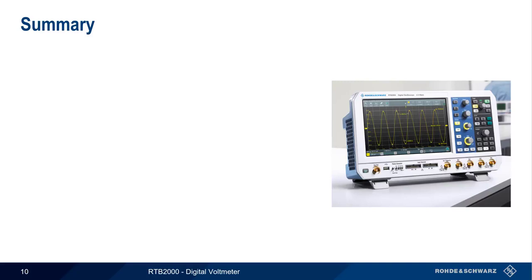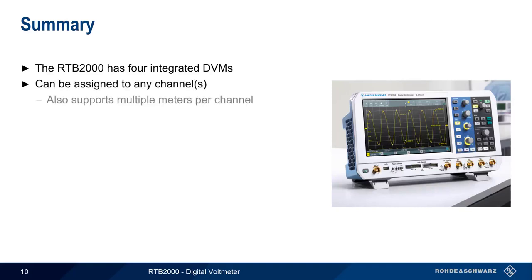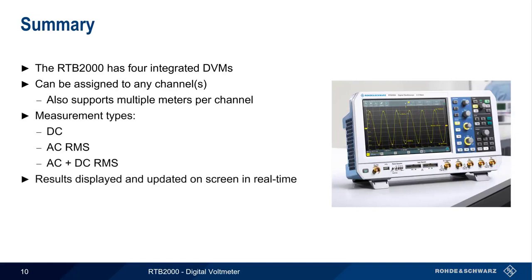Let's end with a brief summary. The Rohde & Schwarz RTB2000 oscilloscope supports four integrated digital voltmeters, and these voltmeters can be assigned to any of the active channels. Multiple meters can also be assigned to a single channel. The supported measurement types are DC, AC RMS, and RMS of a combined AC and DC signal. The results are displayed on the screen in real time in a small movable window. And note that in addition to having a graphical user interface, these DVMs can also easily be configured and monitored using programmatic control.